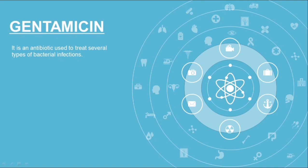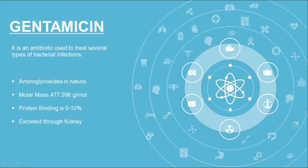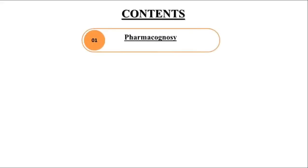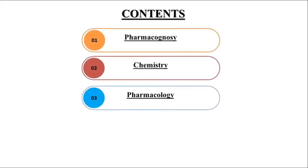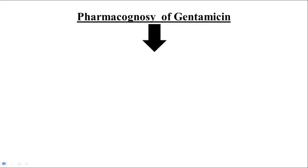Now let's talk about the major properties of gentamicin. It is basically an aminoglycoside in nature. The protein binding is 0 to 10%, the molar mass is 477.59 grams per mole, and it is excreted through the kidney. Our main contents are pharmacognosy, chemistry, pharmacology, clinical aspects, and toxicology.